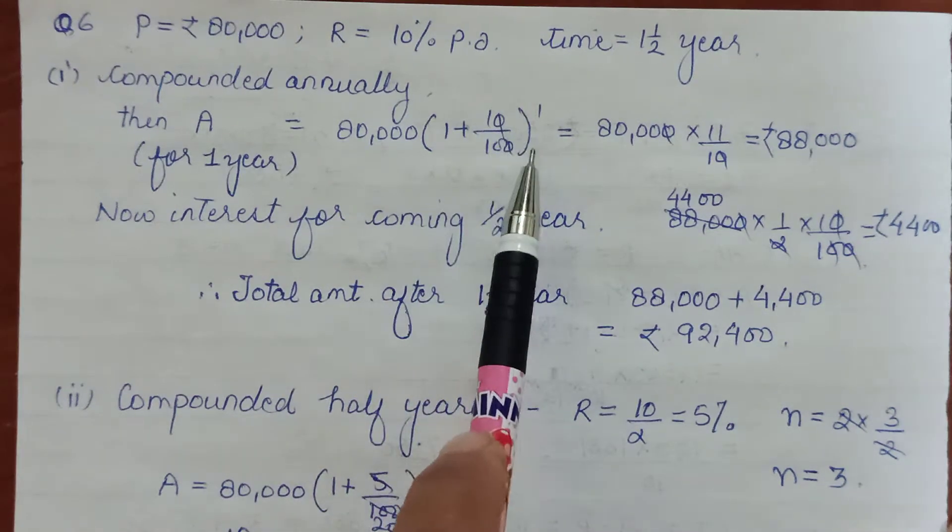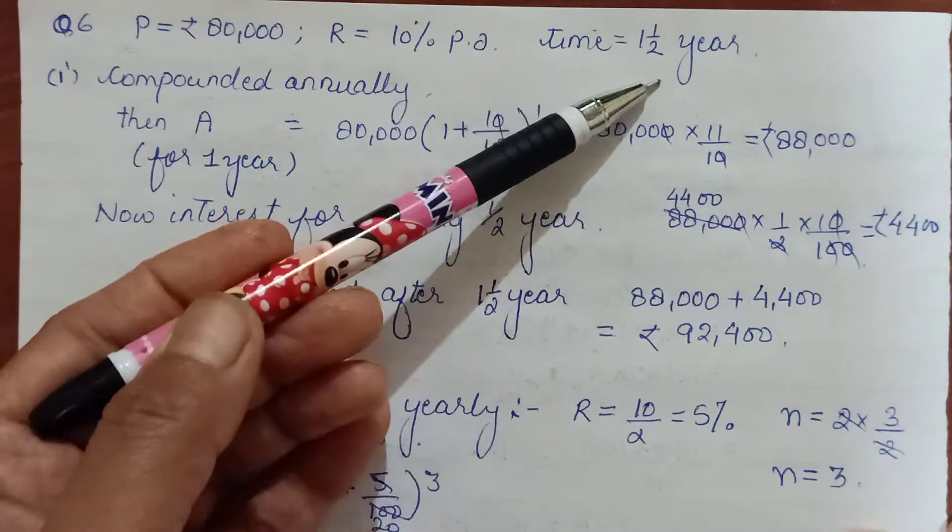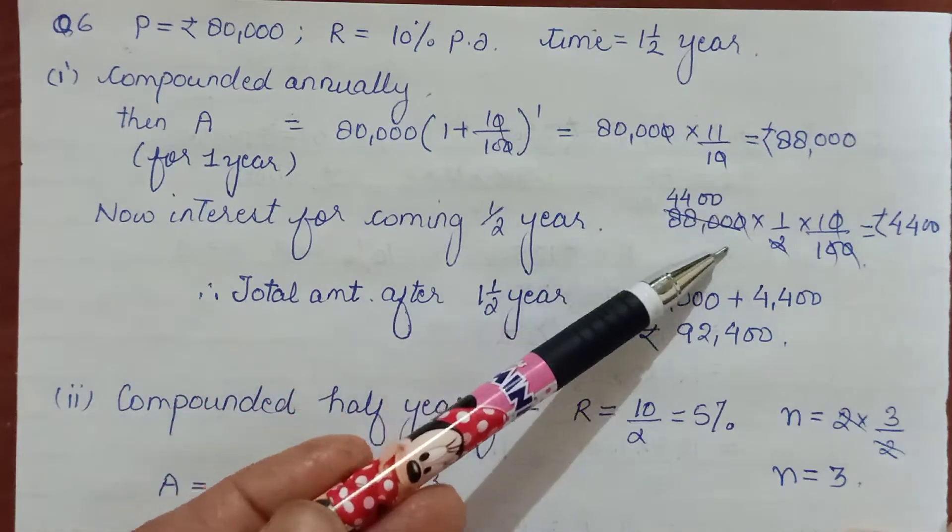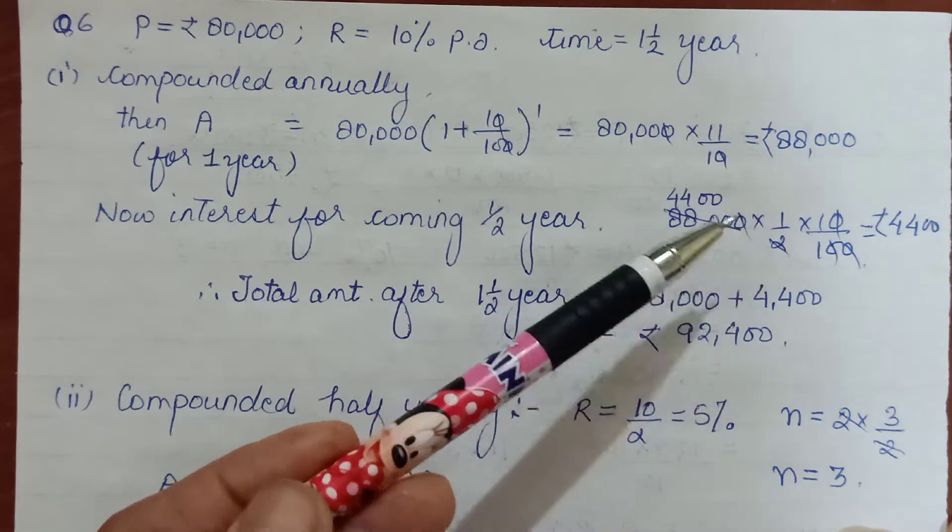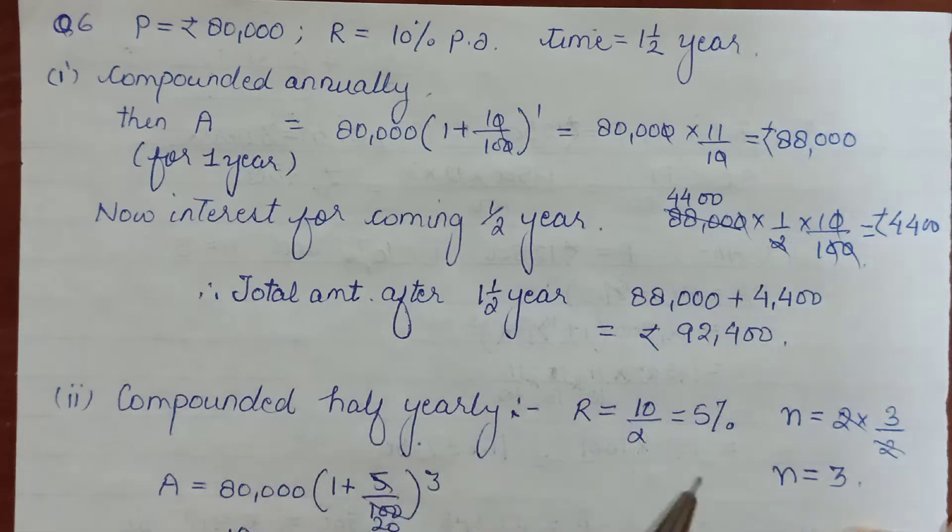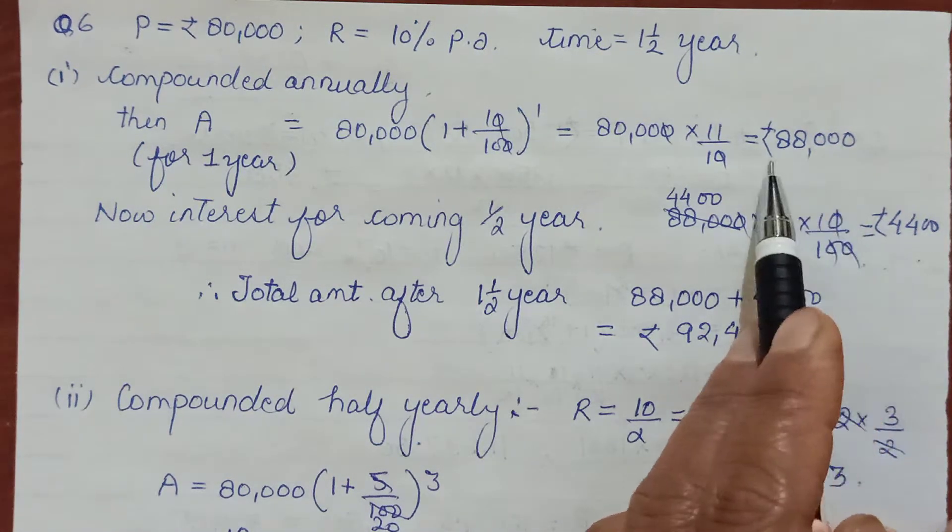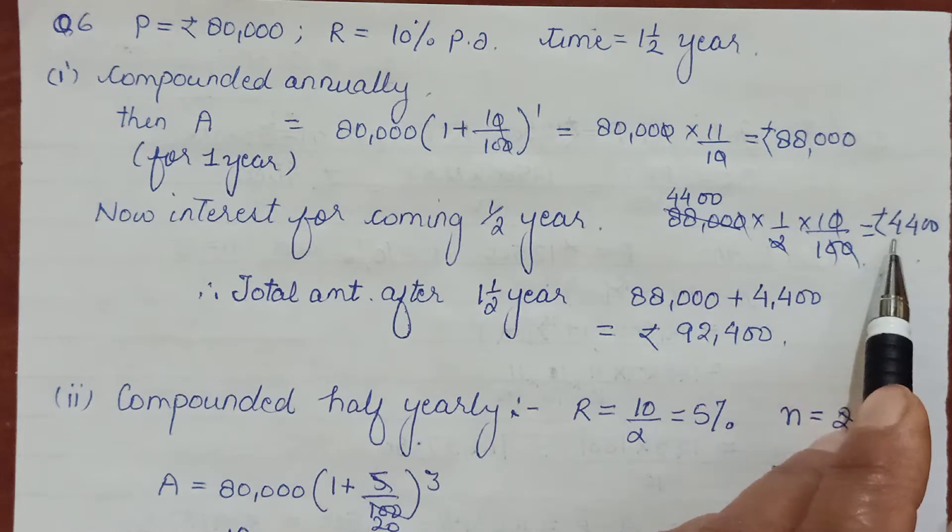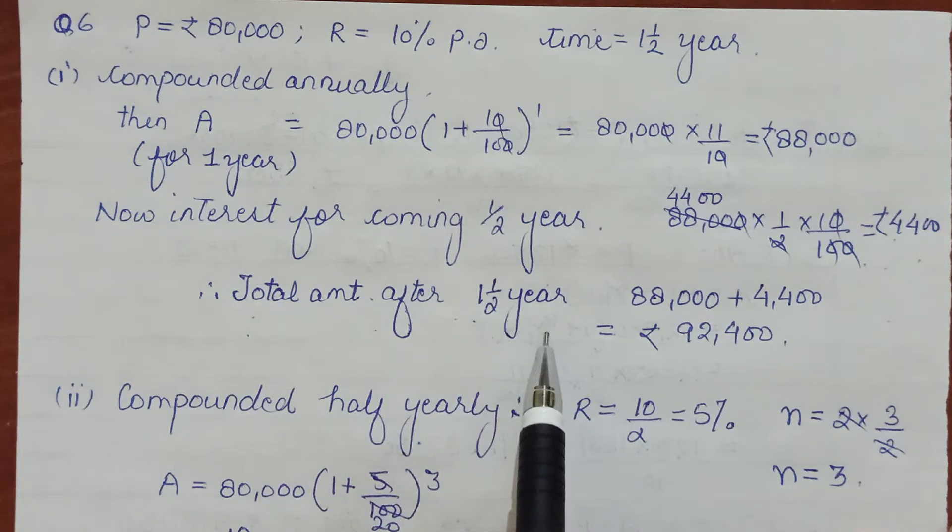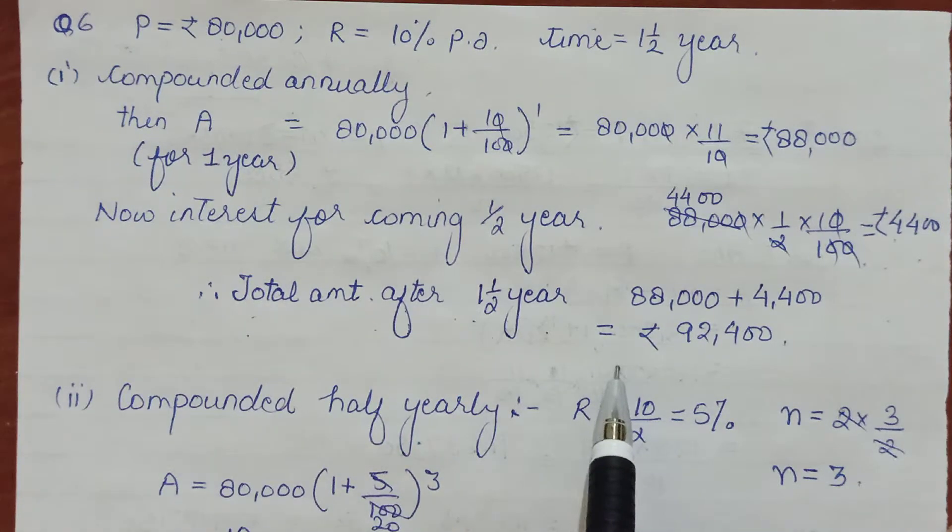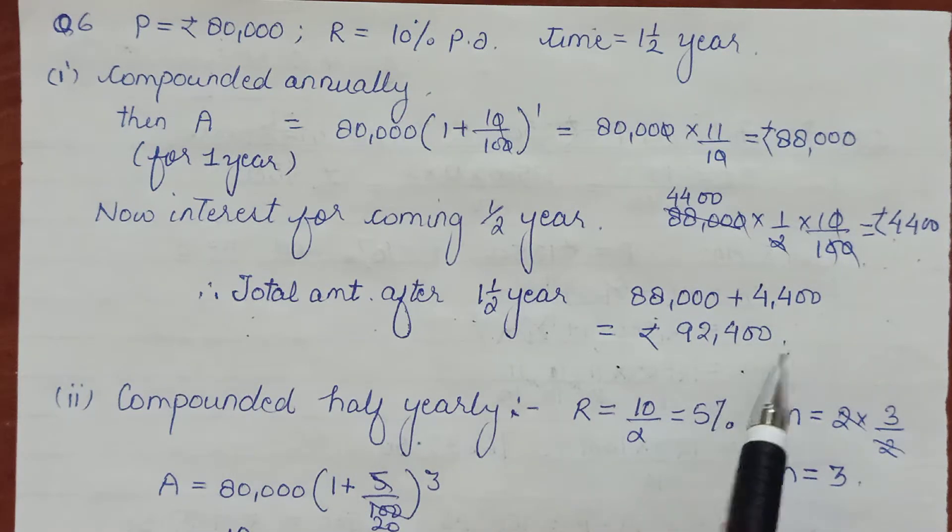Now for the coming half year, taking ₹88,000 as your principal, P×R×T, where R is 10/100 and T is half year. This gives us interest of ₹4,400. The total amount for one and a half years on ₹80,000 compounded annually will be the amount up to one year plus the interest for the coming half year, which is ₹92,400.